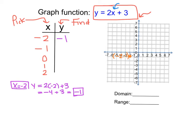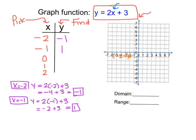Then we do the second point: x is equal to negative 1. So y equals 2 times negative 1 plus 3, which is negative 2 plus 3, which is 1. So when x is negative 1, y is 1. We go to x is negative 1, y is 1, and we plot that point.